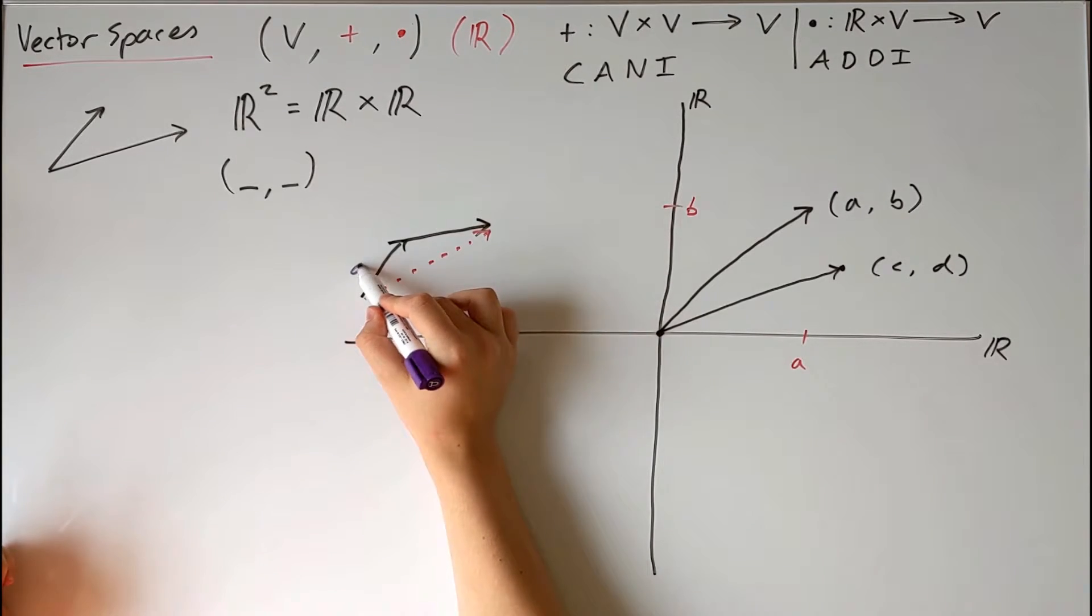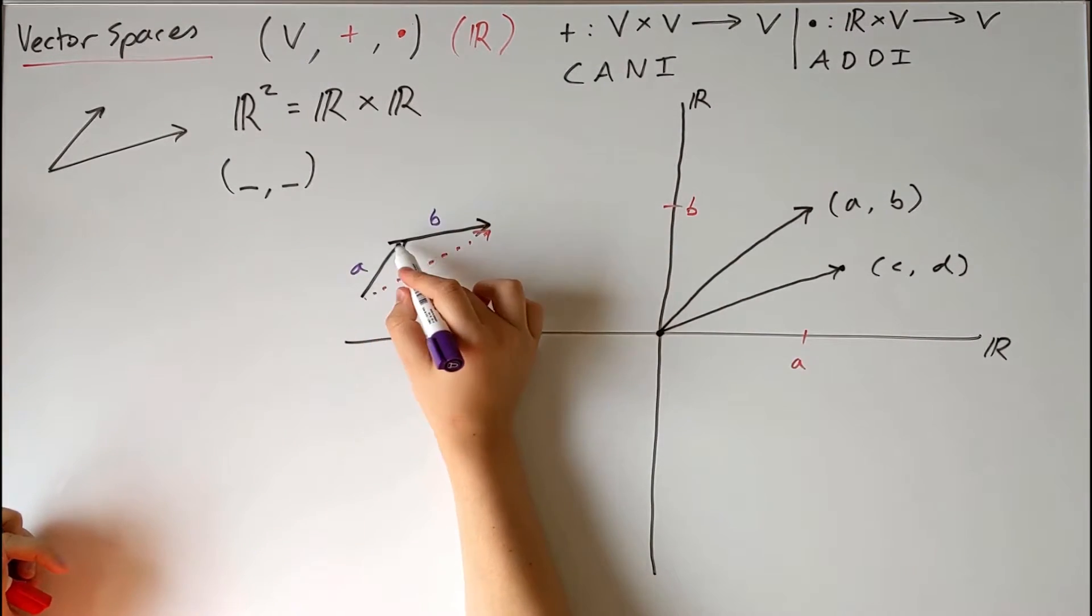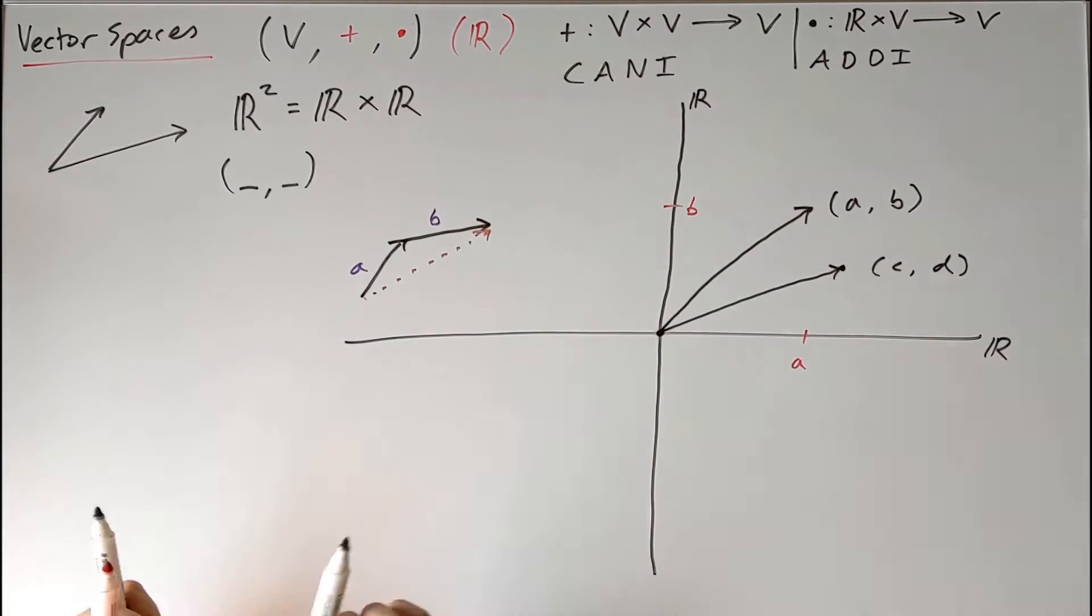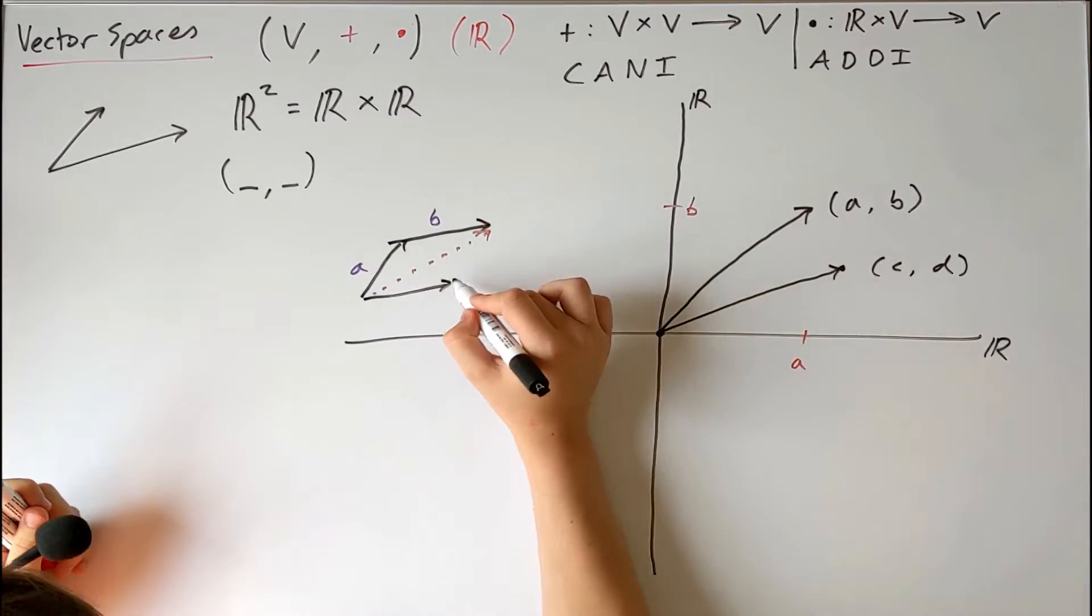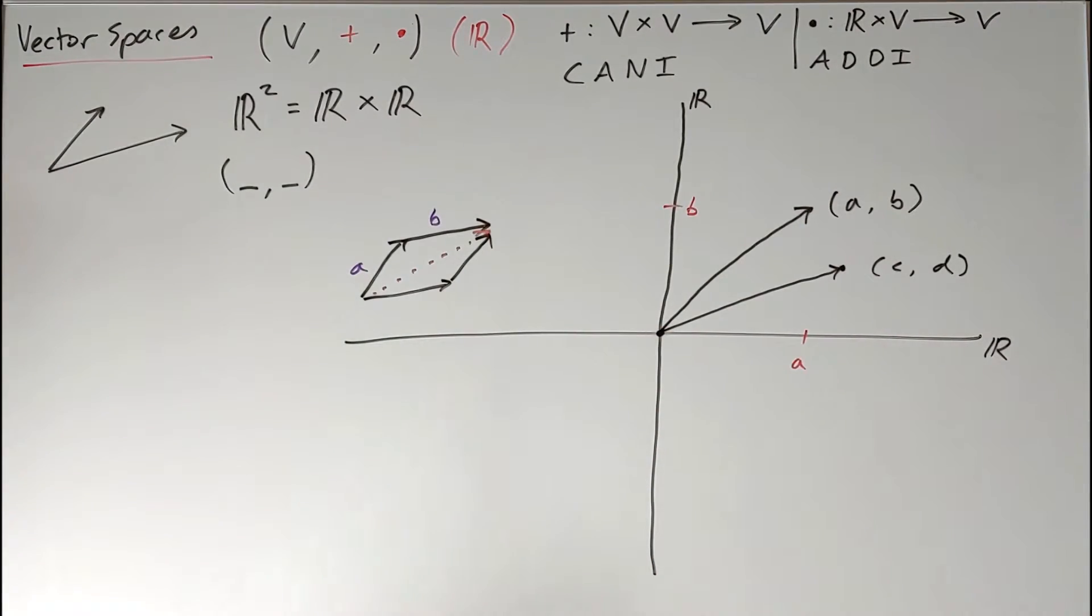If I call this one A, this one B, A plus B is going to be the same as B plus A, so that's good. Commutativity is satisfied.